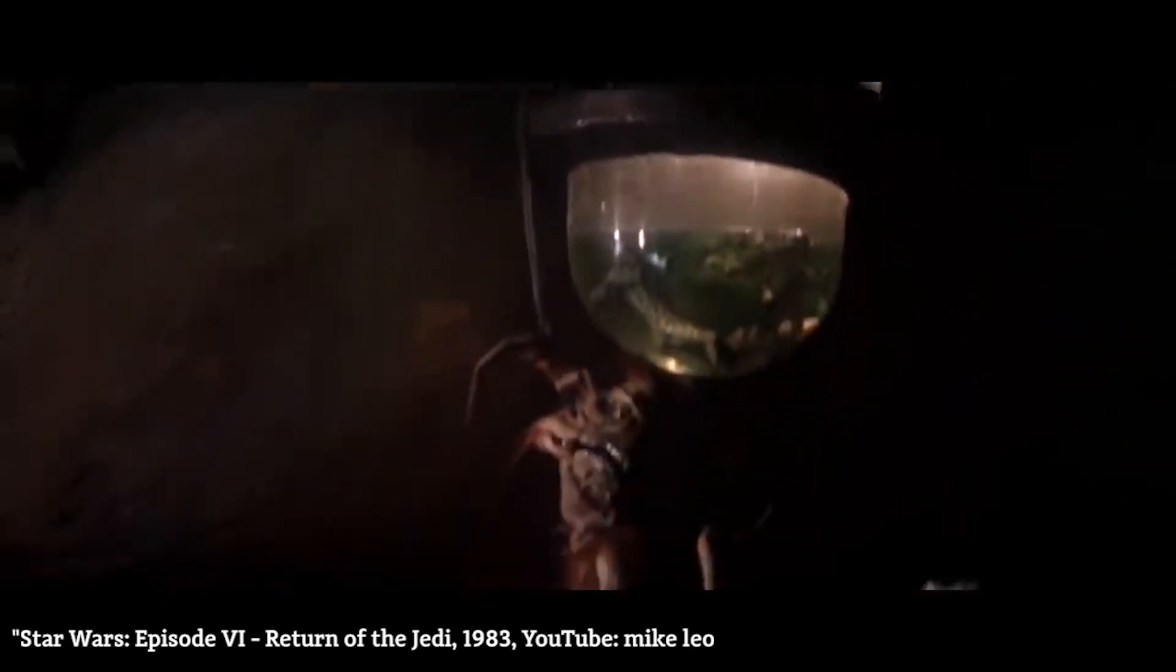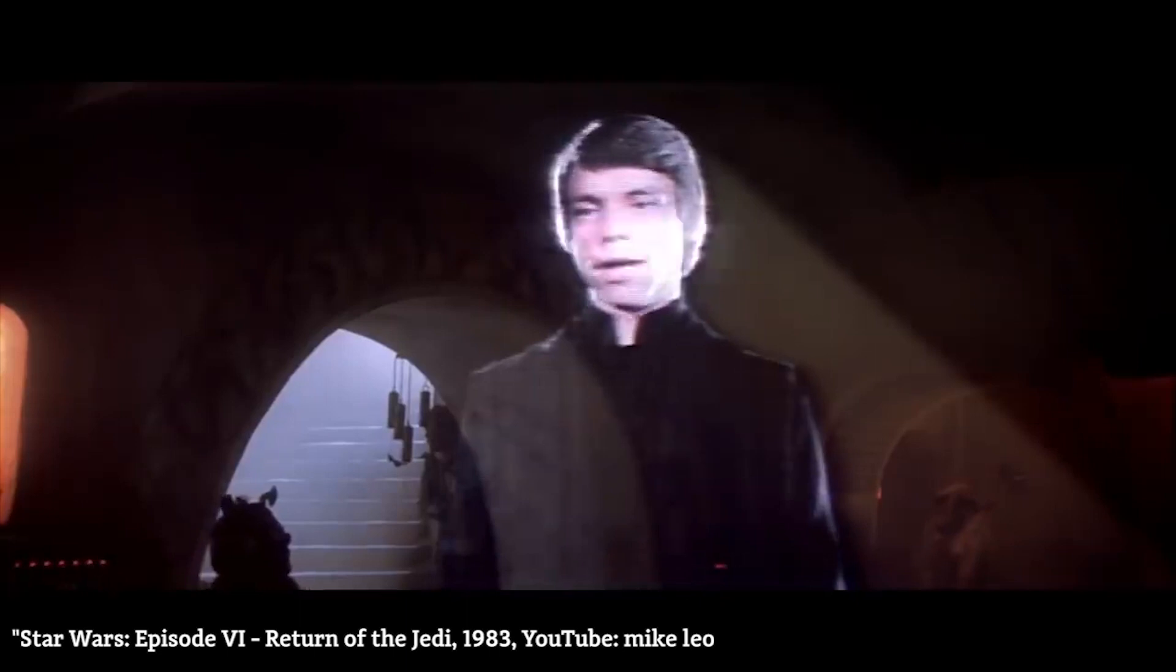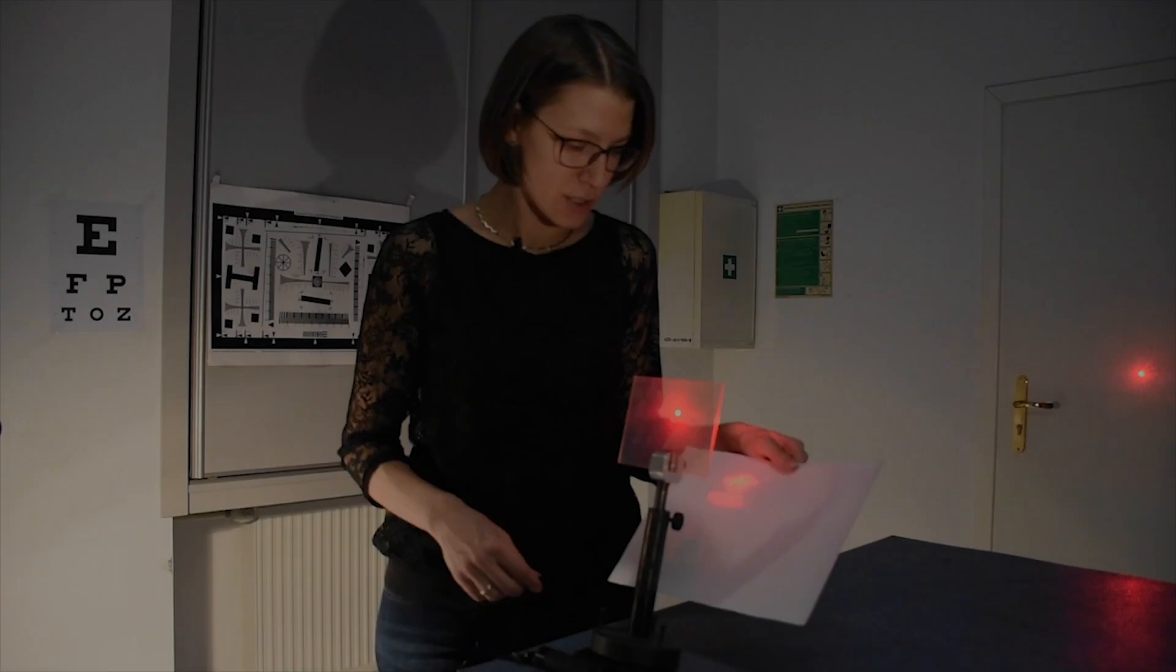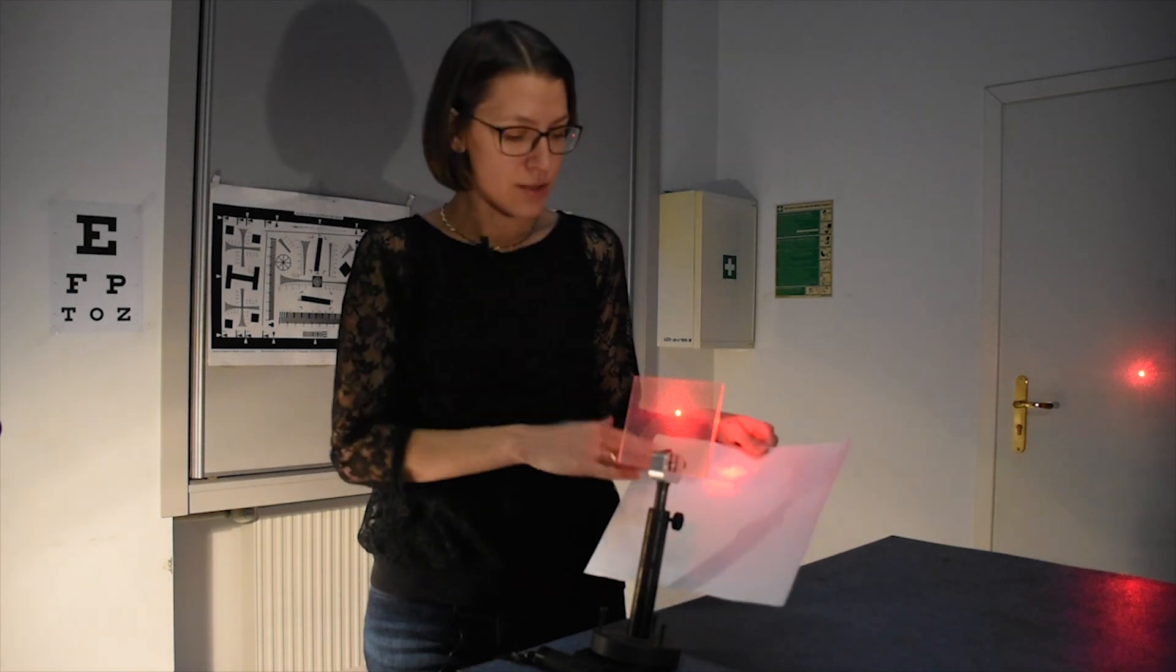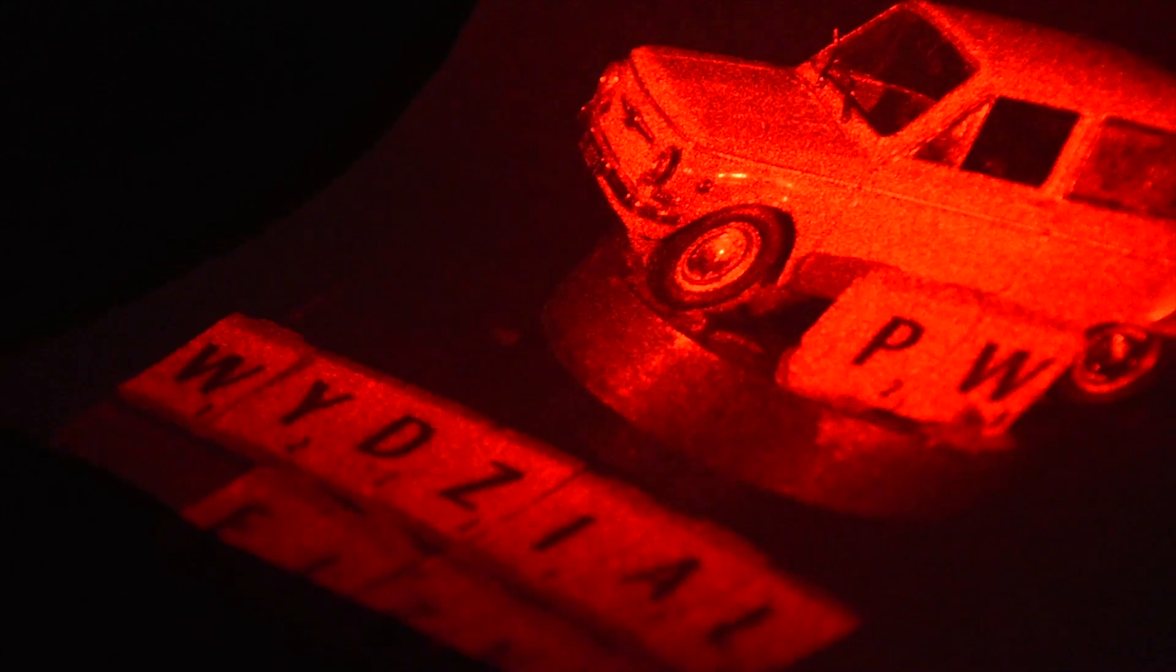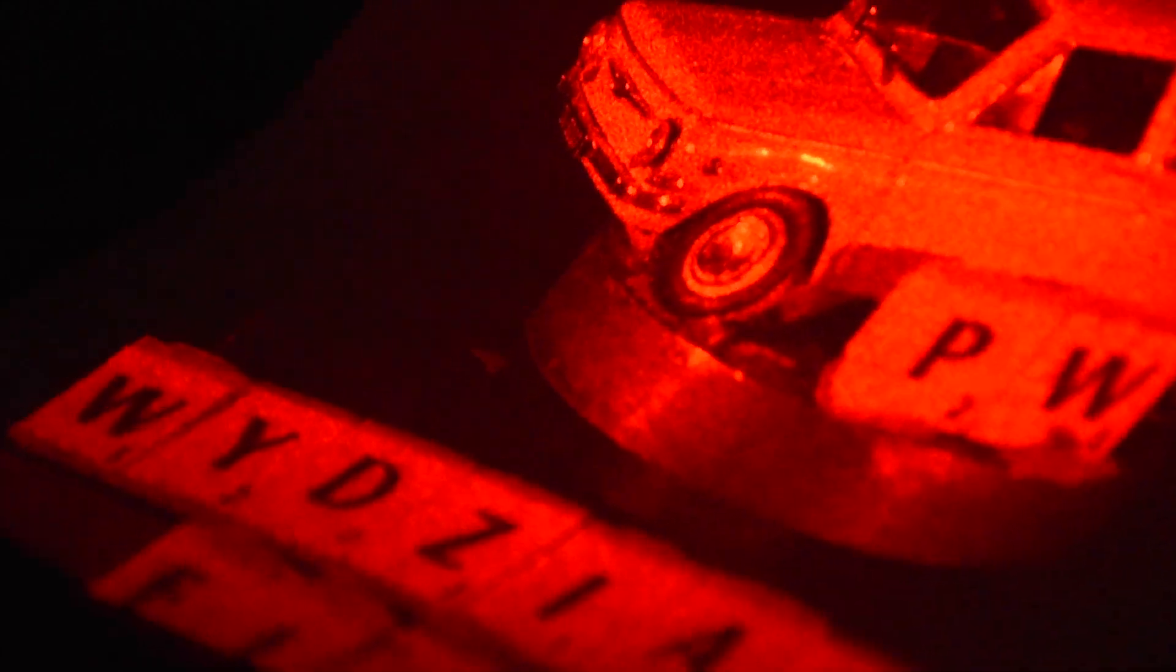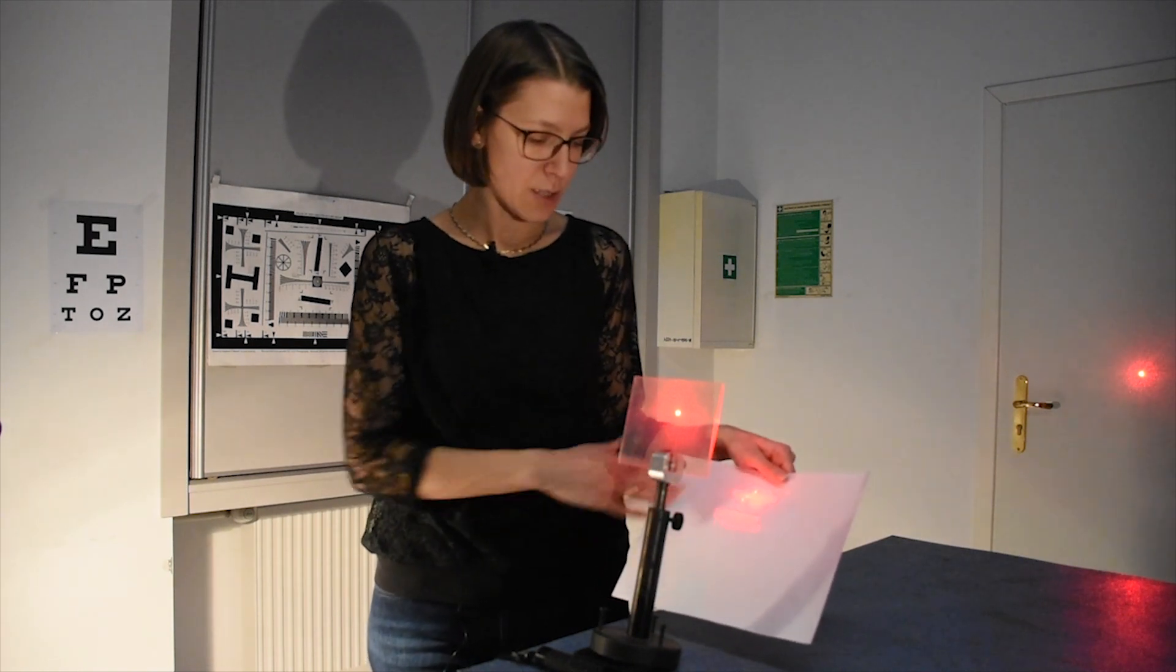Hologram będzie się składał z takich maleńkich kropeczek, które się nazywają speklami i wynikają z tego, że mamy światło koherentne. On nie będzie taki gładziutki. On zawsze będzie złożony z takich maleńkich kropeczek. Im większa będzie powierzchnia, z której odtwarzamy nasz hologram, tym mniejsze będą te kropeczki, tym je mniej będziemy widzieć na naszym obrazie, ale one gdzieś tam będą istniały. I to jest rzecz, która nam zawsze przeszkadza w holografii.